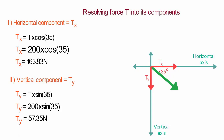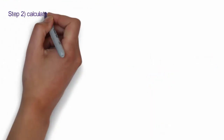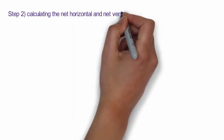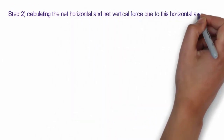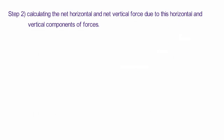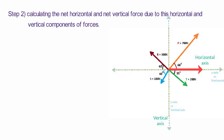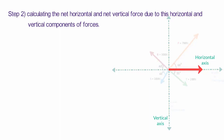Since we have resolved all the forces into their vertical and horizontal components, we have finished the major part. Now we move to Step 2, which is very simple — in fact all the remaining steps are very simple. Step 2: Calculate the net vertical and horizontal force due to these horizontal and vertical components. To get the net horizontal force, we sum up all the horizontal components of forces.